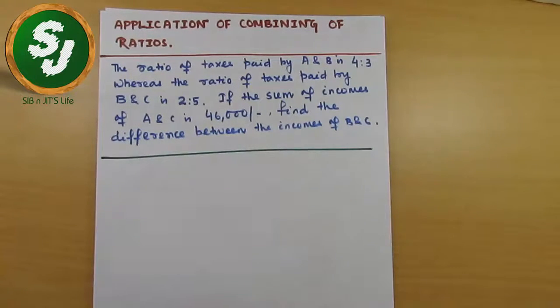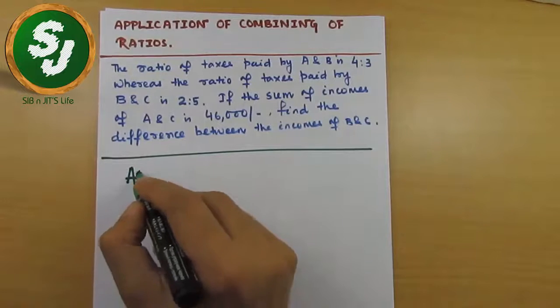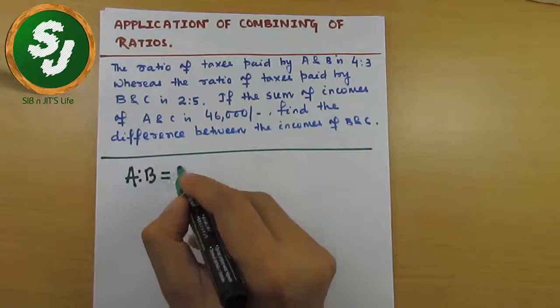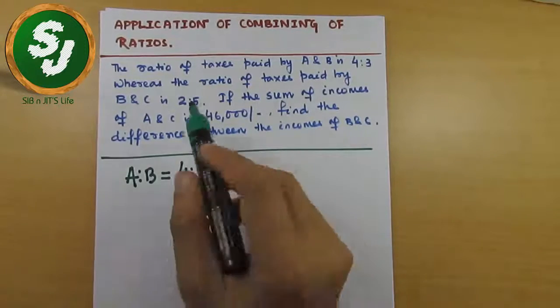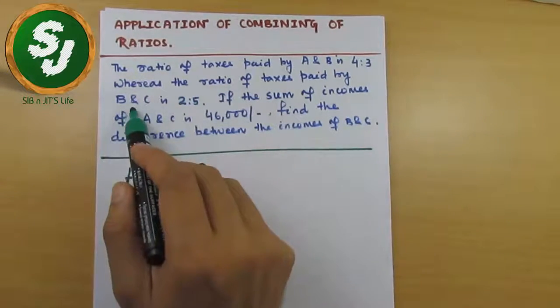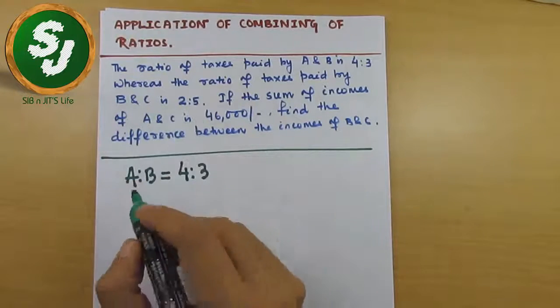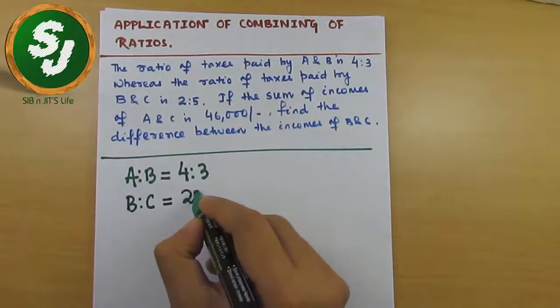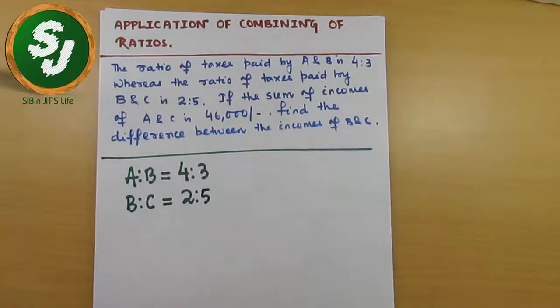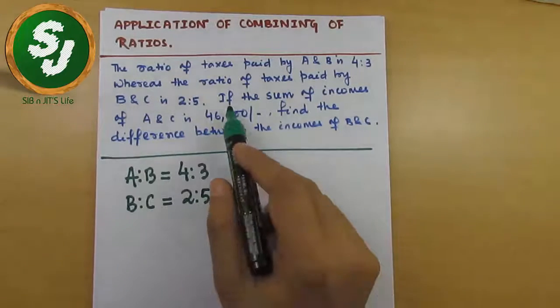by A and B is 4:3. So the information is A:B equals 4:3, whereas the ratio of taxes paid by B and C is 2:5. So B:C equals 2:5.